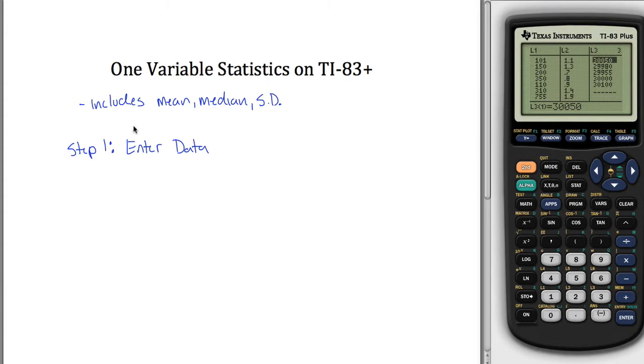Let's figure out mean, median, standard deviation, et cetera, supposing these five observations were our data. So step one is enter the data. Step two is you want to hit the stat button. Step two is run one variable statistics.